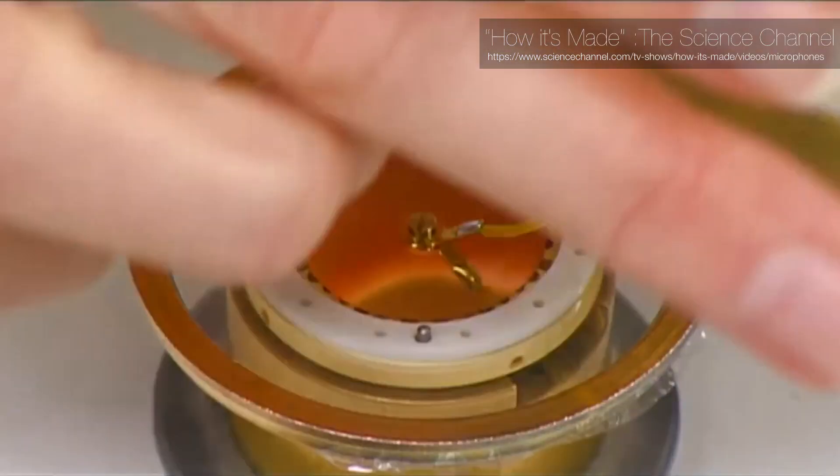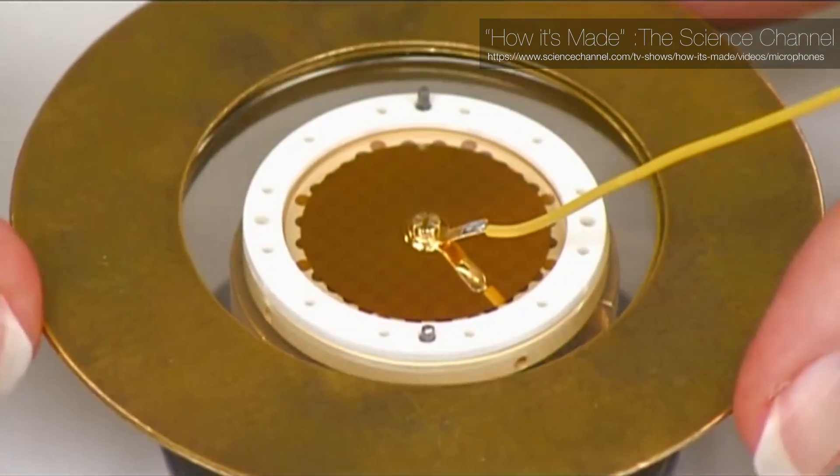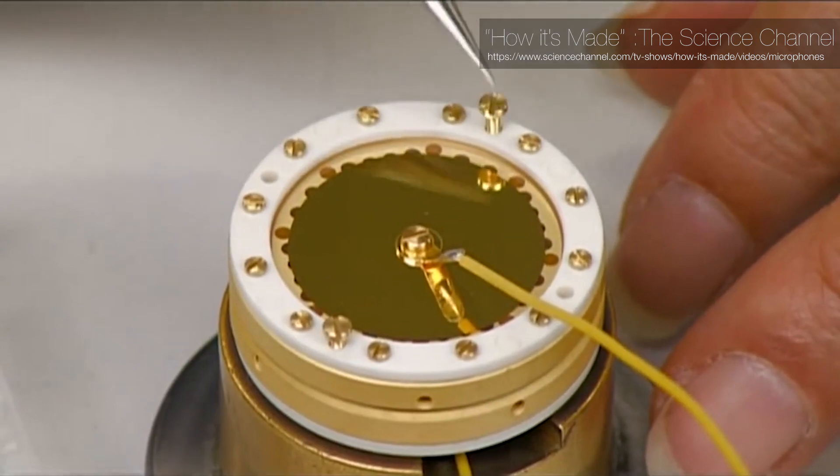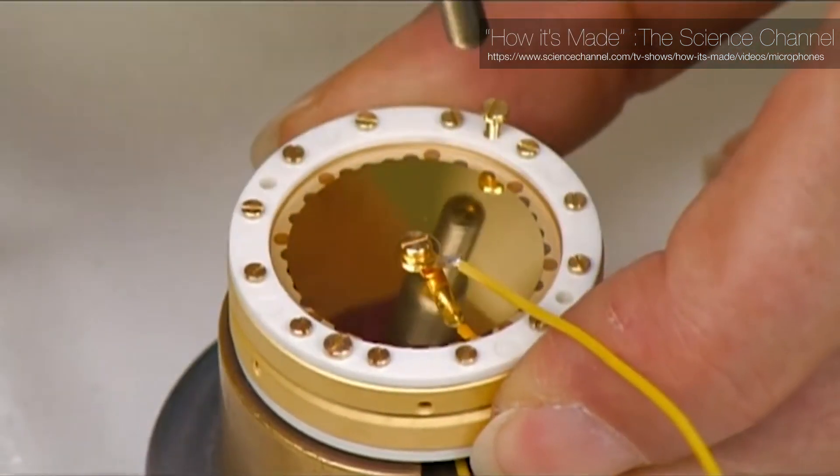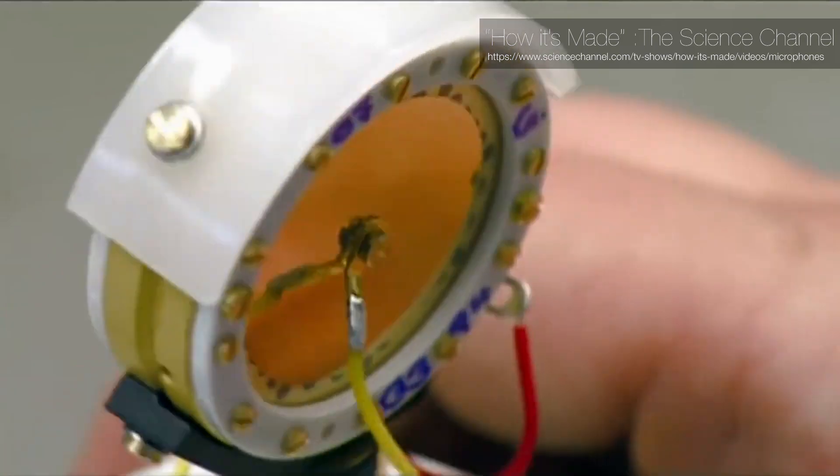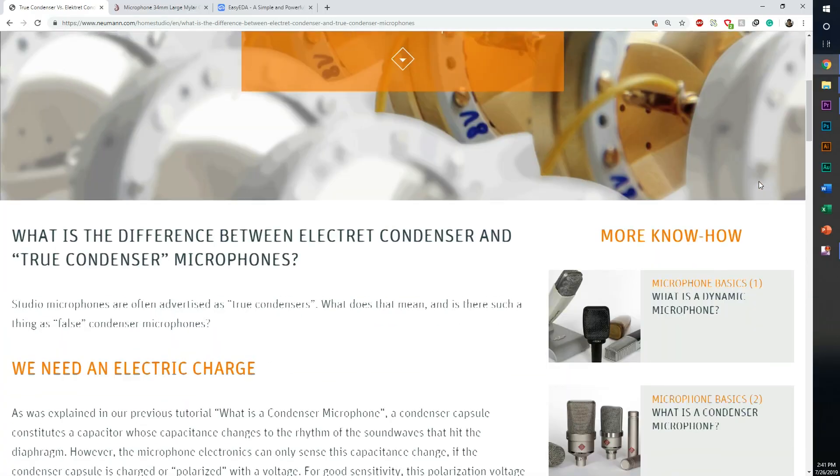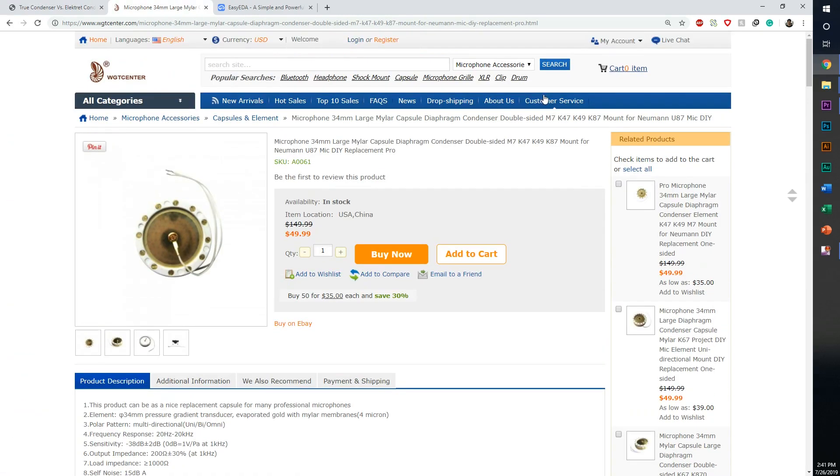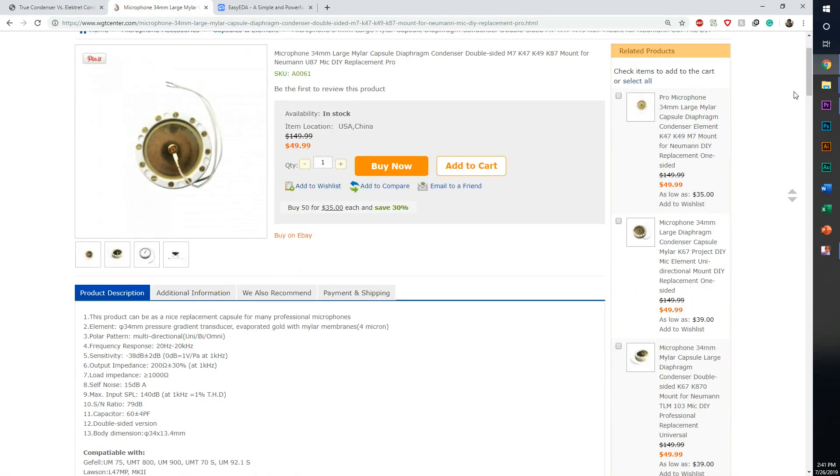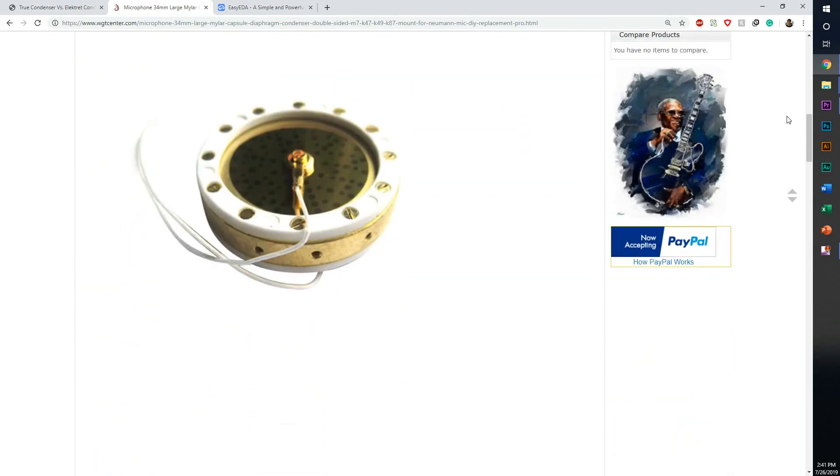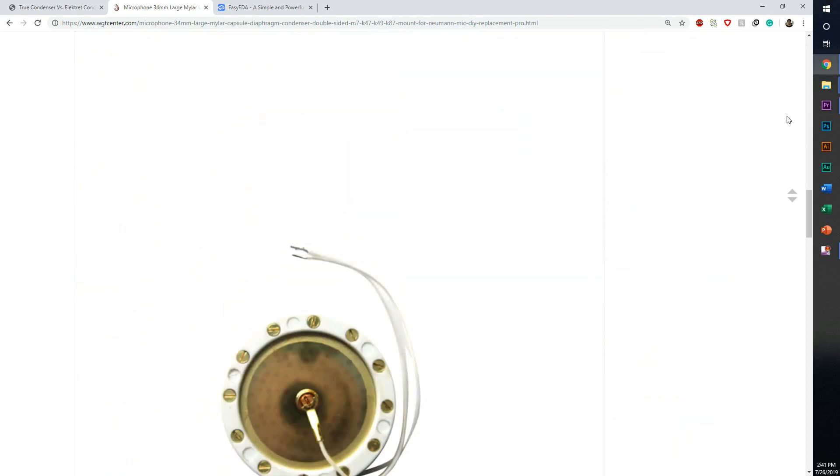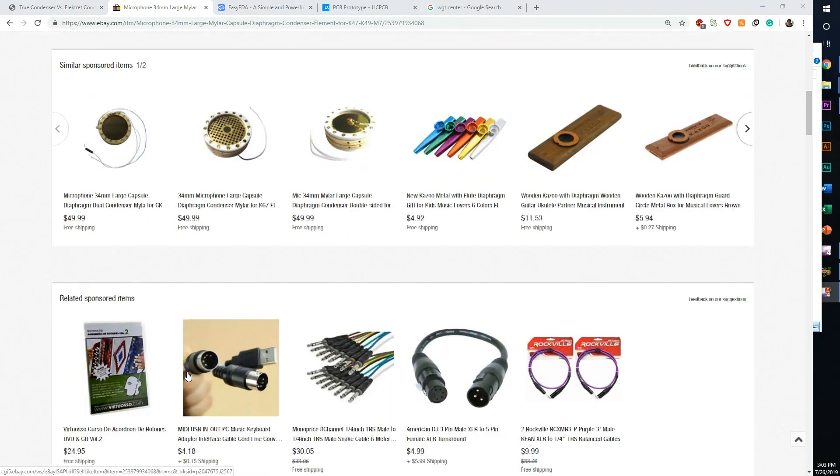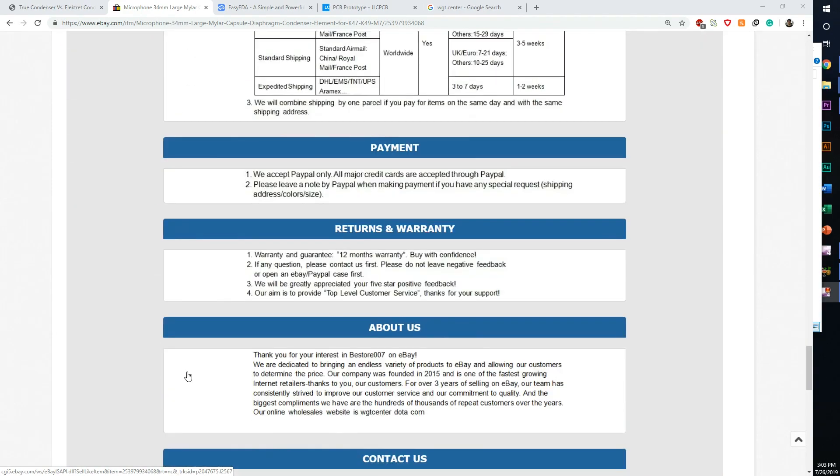The next step is to choose a capsule for the microphone. The capsule is the heart of any microphone and it is perhaps the most important component of any condenser microphone. Good quality capsules can be expensive, but they're essential in providing a nice pleasant sound. I wanted to use a true condenser capsule rather than a back electret technology. Luckily, there is a manufacturer called WGT Center that manufactures high-quality, true condenser capsules for a relatively cheap price.